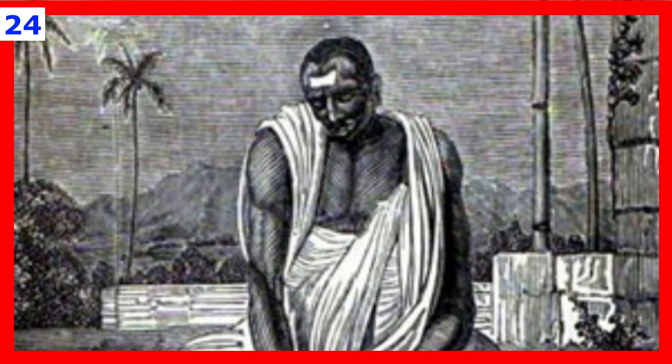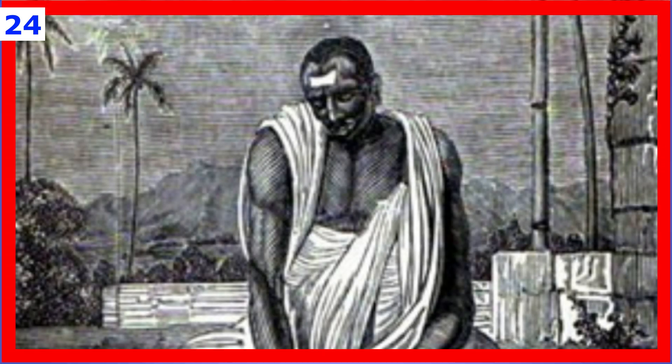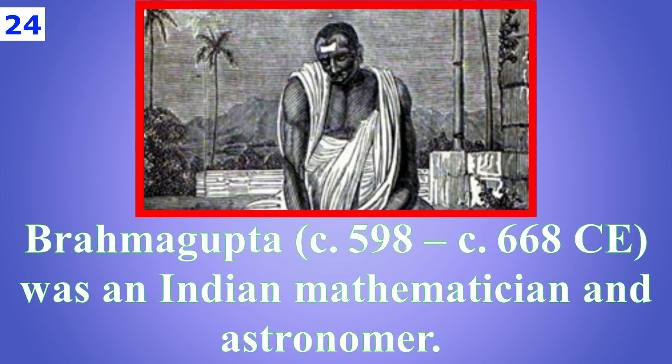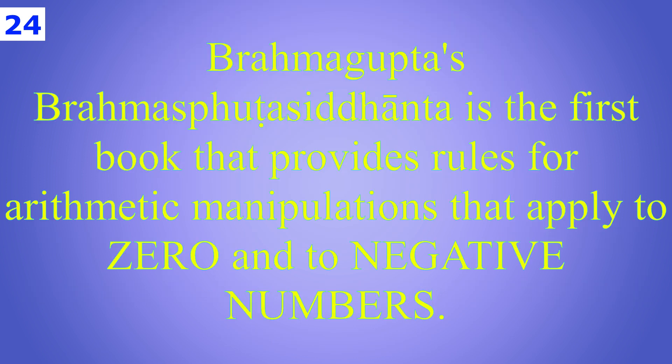A little information for you. In the 17th century, the Indian mathematician Brahmagupta is said to be first to write rules for negative numbers in addition, subtraction, multiplication, and division.